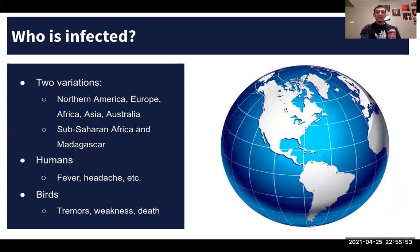So there are two variations of the virus, with one strain that affects Northern Americas, Europe, Africa, Asia, Australia, while the other strain affects the Sub-Saharan Africa region and Madagascar.